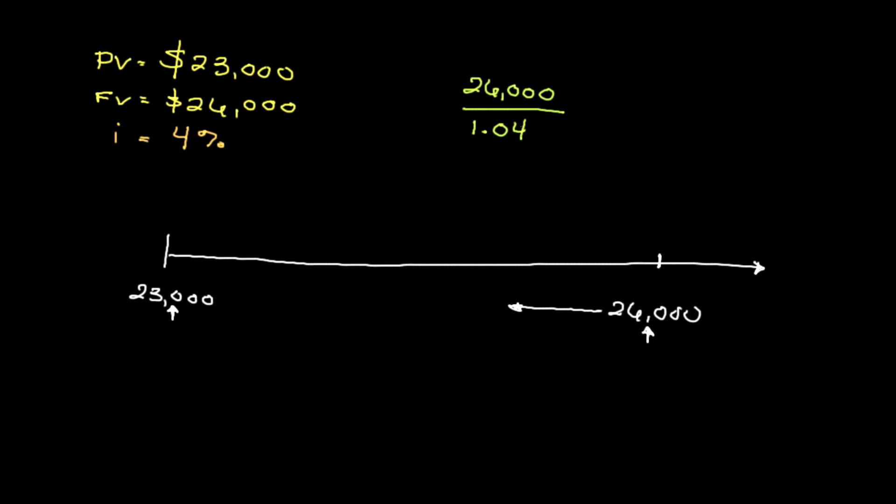1.04, where 0.04 is the decimal equivalent of 4%. If you run through the calculations, you'll get $25,000. This means our $26,000 is actually worth the equivalent of $25,000 when factoring in inflation.